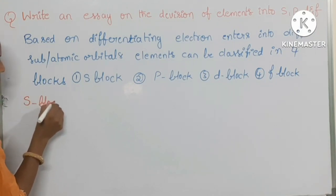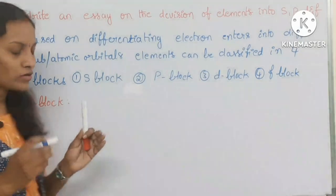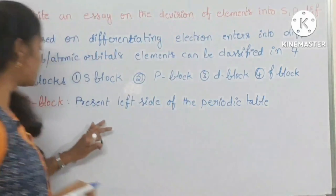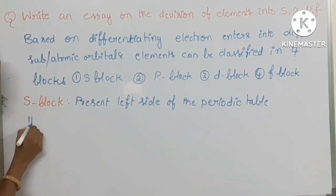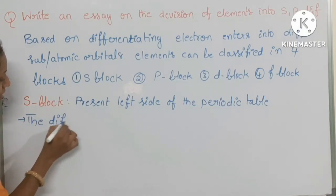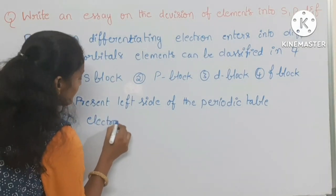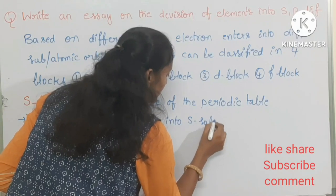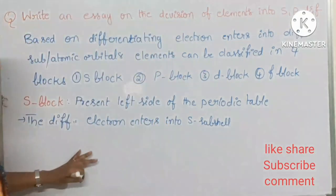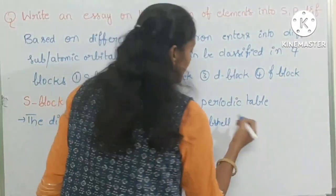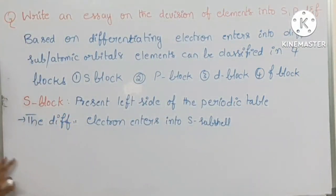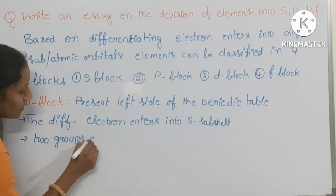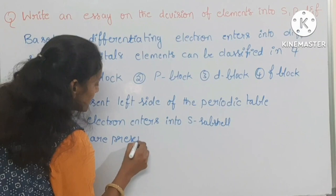The first one is s block. The s block is present on the extreme left side of the periodic table. The differentiating electron enters into the s subshell. All those elements come under the s block. In s block, two groups are present.